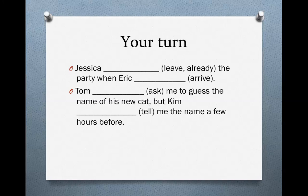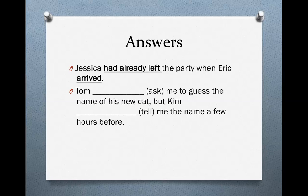Okay, let's look at the answers. In the first sentence: Jessica had already left the party when Eric arrived. We have two events — Jessica left the party and Eric arrived. Which one happened first? First Jessica left the party, then Eric arrived. So because Jessica's leaving happened first, we use past perfect — had left. Since Eric arriving happened second, we use simple past — Eric arrived.